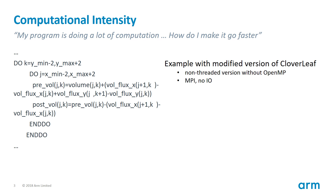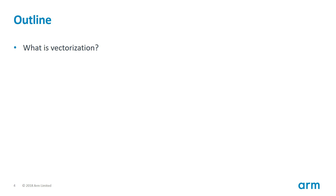Let's illustrate a problem you will usually face when writing an application for HPC. Your code consists of many loops which are performing the same operation many times over but with different items of data. How can we make sure that our code will be optimized and run as fast as possible? In particular, how do we check that our code is exploiting a processor's vectorization capability? For this webinar we have modified a hydrodynamics mini-app called CloverLeaf which uses MPI, to illustrate how we can investigate vectorization.